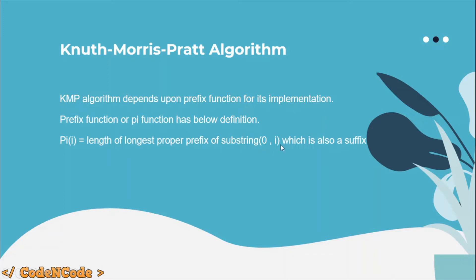Here we are talking about the proper prefix. A proper prefix of a substring is a prefix which is not equal to the substring itself. So if the substring is 'abc', then the prefix 'abc' is not considered a proper prefix because it equals the substring itself. So we will only consider proper prefixes and suffixes for calculation of the prefix function.